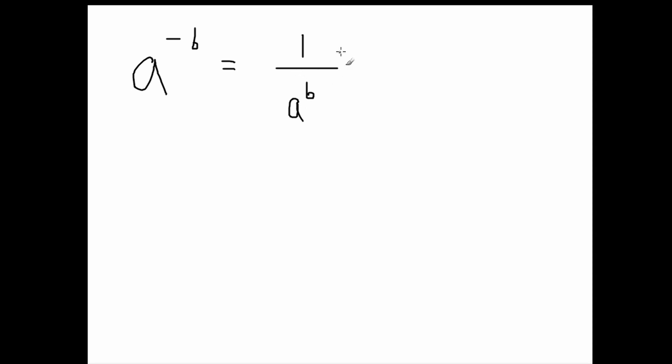Well, first of all, we can multiply both sides by a to the b, because then that will just cancel out this in the denominator, and we will all be left with 1. And we did it on the right side, we have to do it on the left side also. So times a to the b.